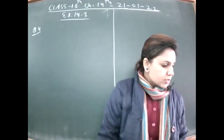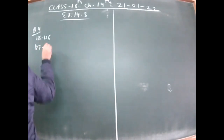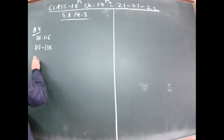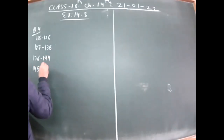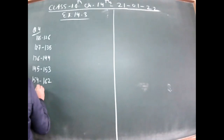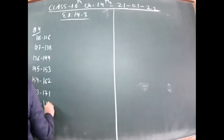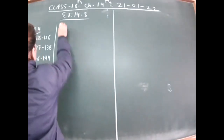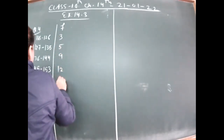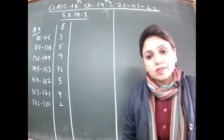The question gives the length in mm of particular objects in the form of intervals: 127 to 135, 136 to 144, 145 to 153, 154 to 162, 163 to 171, and 172 to 180. The corresponding number of leaves — the frequencies — are 3, 5, 9, 12, 5, 4, and 2.